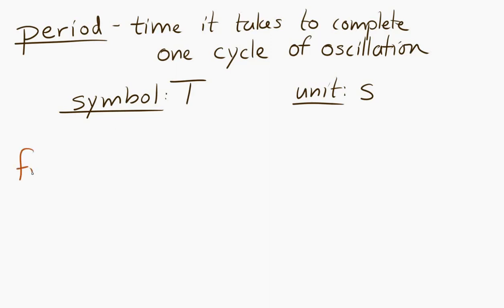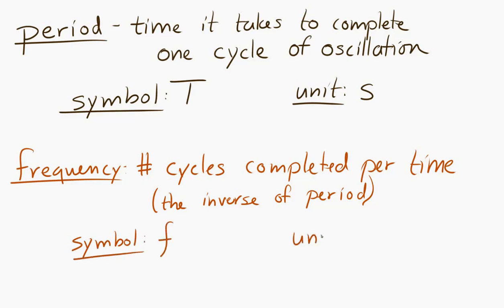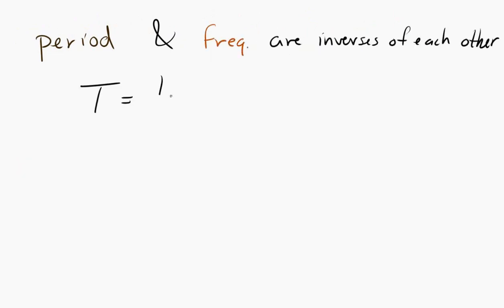Frequency is the number of cycles completed per unit time — so it's the inverse of the period. Period is the time it takes per cycle; frequency is the cycles per time. The symbol for frequency is a lowercase f, and the unit is the inverse second, also defined as a hertz (Hz). Period and frequency are inverses: T = 1/f, or equivalently f = 1/T.